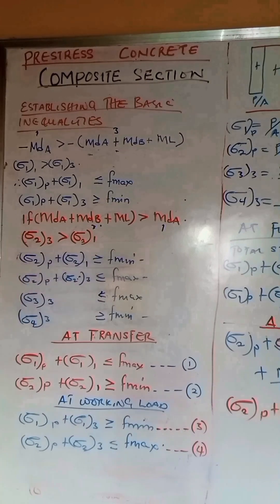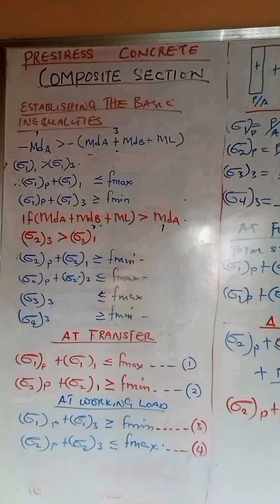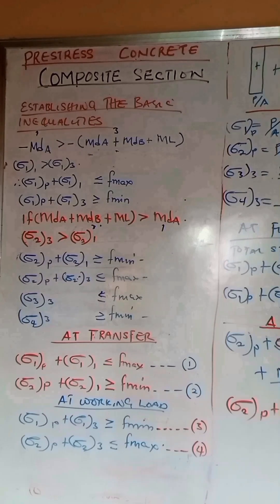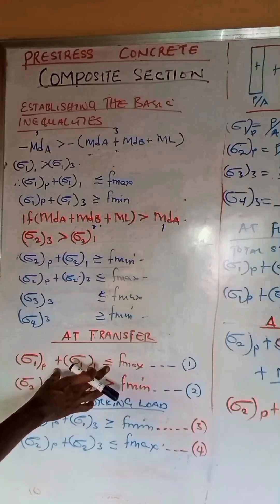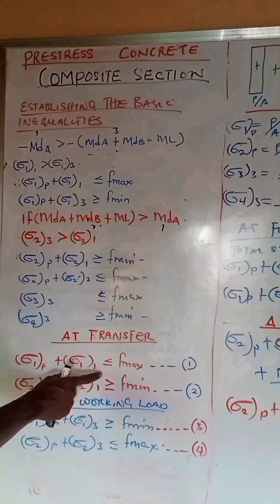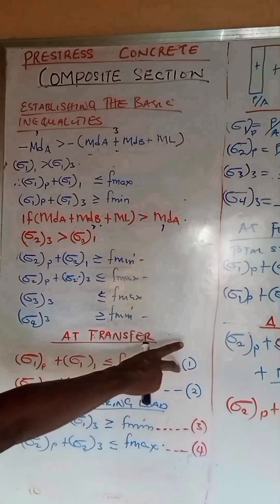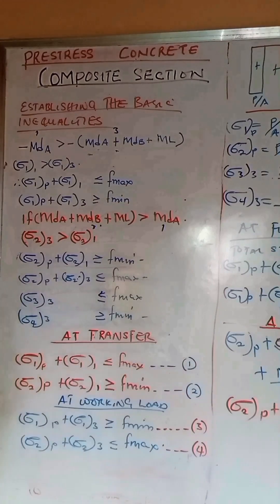Now let's look at the stresses at transfer. At transfer, only the precast section is analyzed — it is constructed in the factory — so only the self-weight is present, represented by load combination one. At transfer we deal with load combination one at both fiber one and fiber two. The maximum stress is located at fiber one and the minimum stress at fiber two, resulting in the inequality we call equation one.